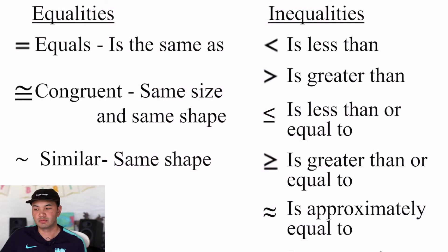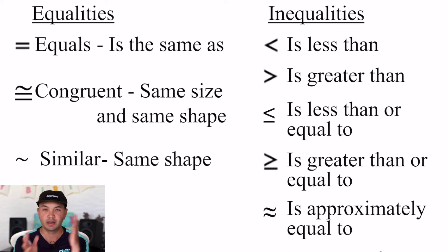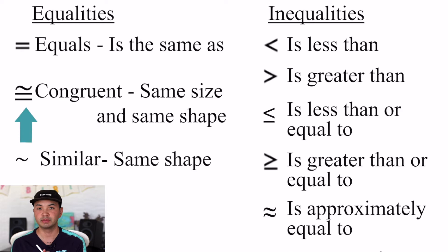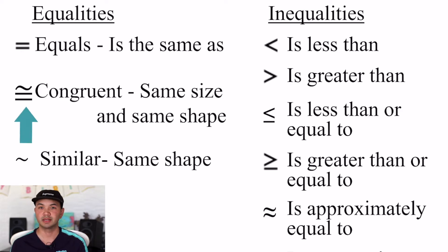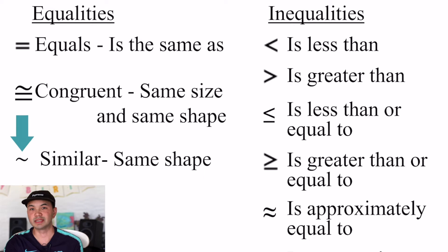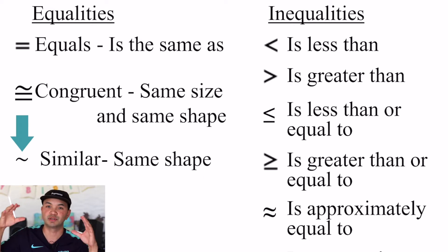So right here we have some symbols. There are equalities and inequalities. Equalities — you're used to an equal sign. But then there's also the congruent symbol, which is an equal sign with a squiggly line on top, which means same size, same shape. We usually use that for geometry, for figures. And similar, meaning same shape — so like a small triangle is similar to a big triangle.